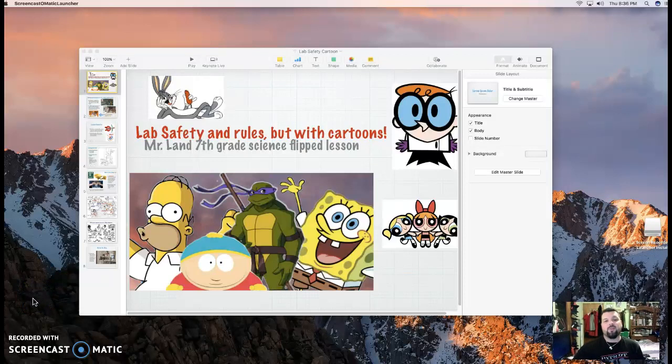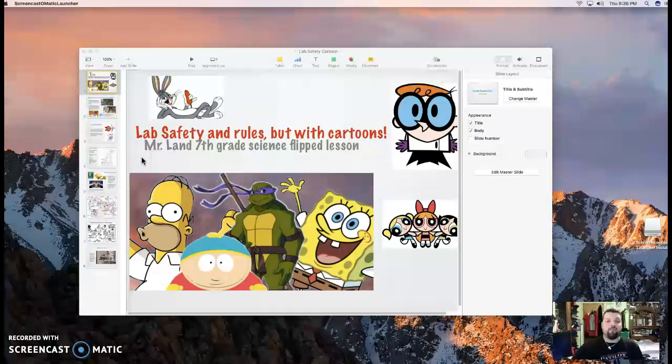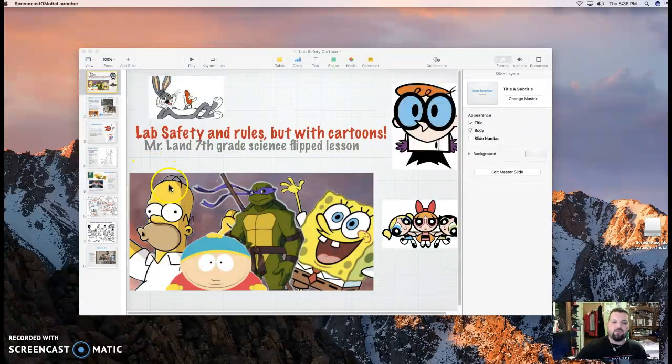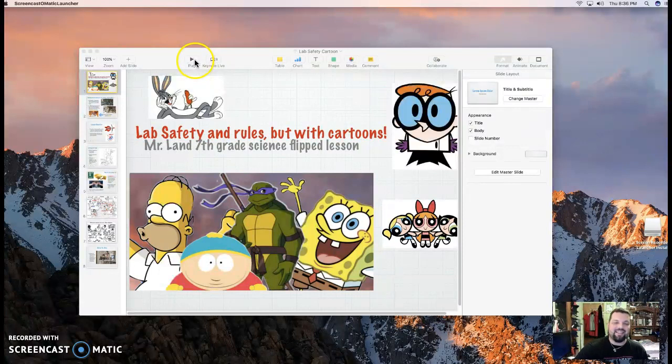Alright kids, welcome to the flip lesson here with Mr. Land. In 7th grade science, we are going to learn a little bit more about lab safety and rules, but we're going to use cartoons. Not Homer Simpson or SpongeBob, but just some regular lab cartoons to try to identify some of the correct and incorrect procedures in the laboratory.